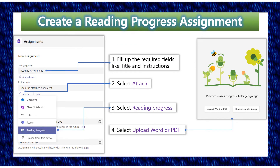After clicking Create, do the following steps. Number 1: Fill up the required fields like Title and Instructions. Number 2: Select Attach. Number 3: Select Reading Progress.